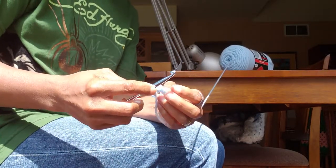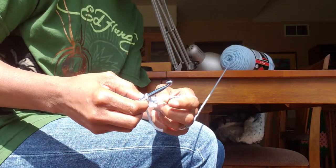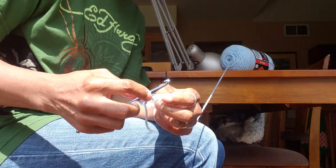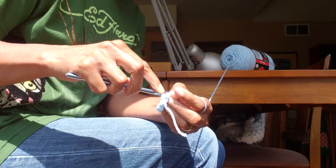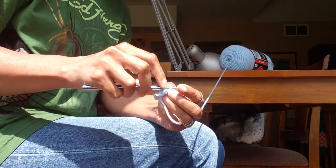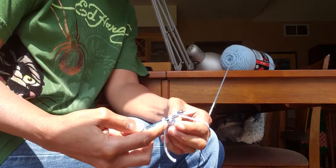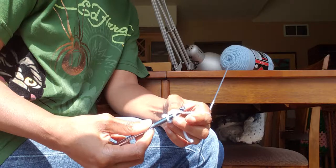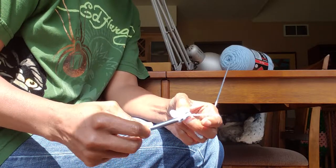So now I'm going to take my needle through the next chain, and it seems to be right here. So I take the needle through, hook the yarn - see, I've got two loops on that needle now - so I hook the yarn and bring it through.